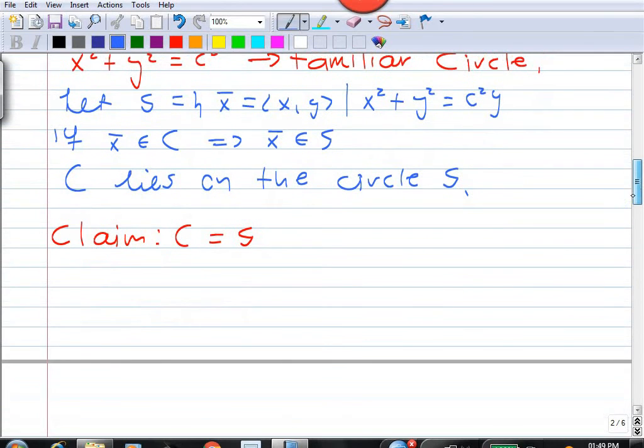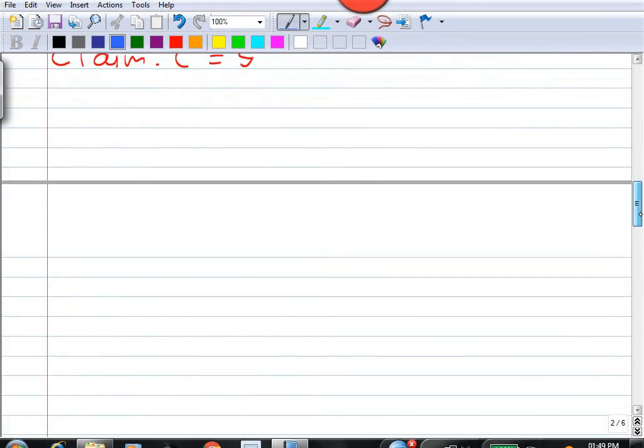that our curve C is in fact the circle. So, how do we do that? How do we show that our curve C is in fact the circle?